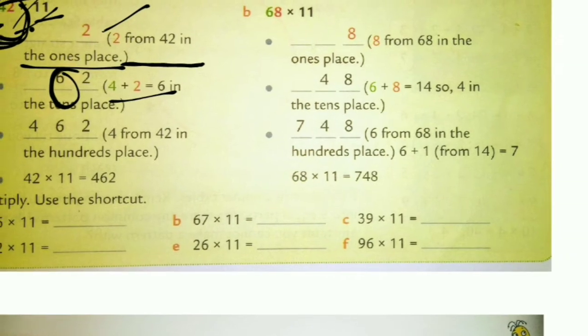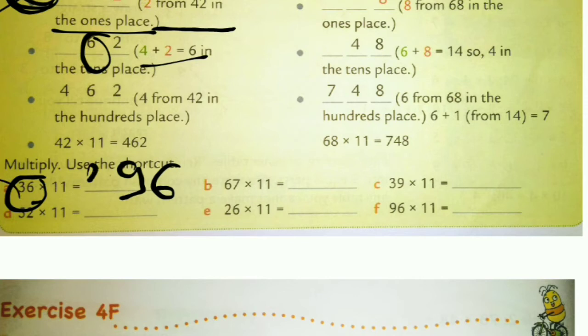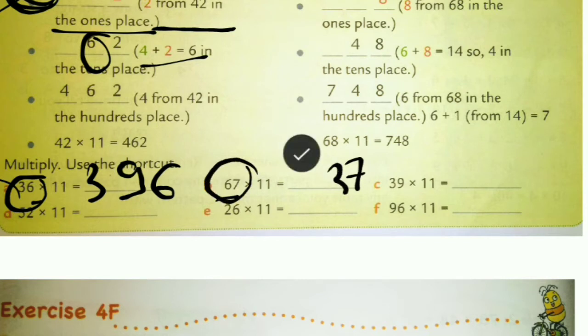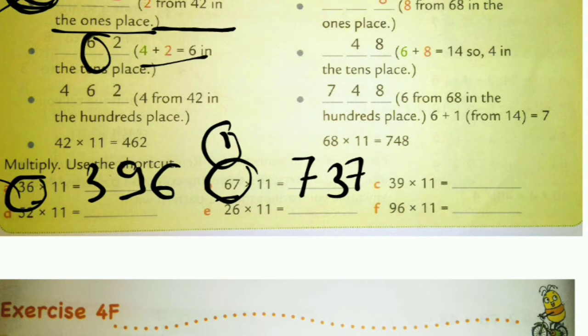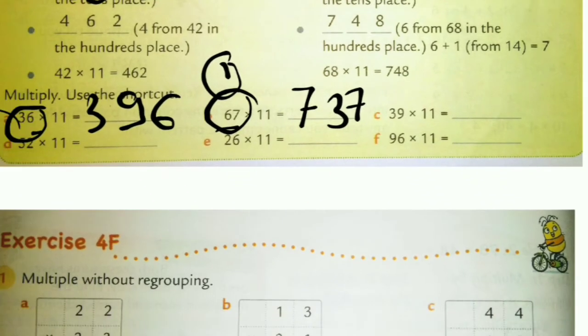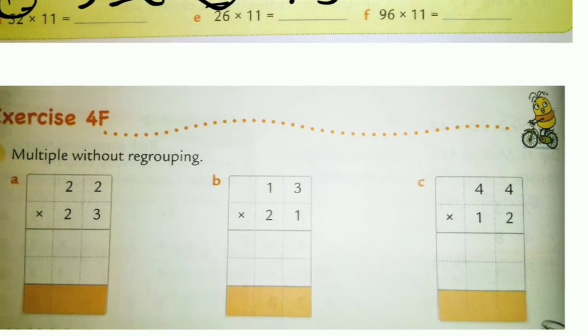After adding 4 plus 2 to get 6, write the tens digit 4 as it is. So 42 multiplied by 11 equals 462. For 36 times 11: ones digit is 6, then 6 plus 3 is 9, then 3 — giving 396. When there is a carry, like 6 plus 7 is 13 — write 3 carry 1, then add 1 to the next digit. You can also verify using the long multiplication method.